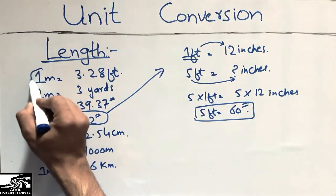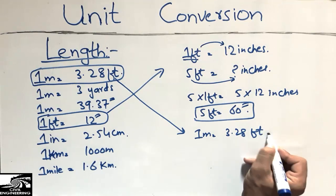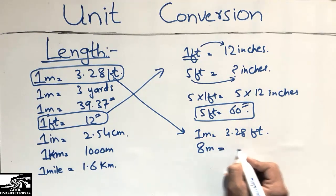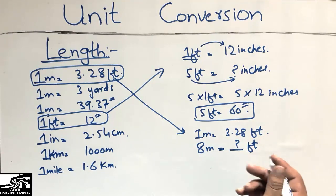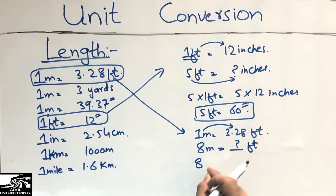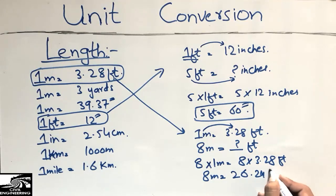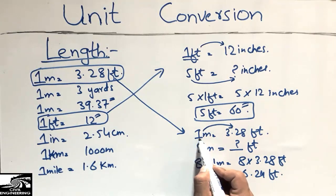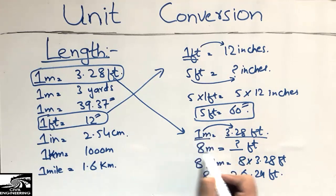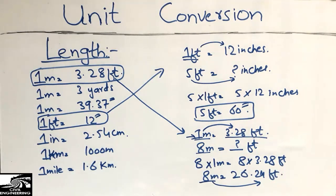The second example: how many meters is how many feet. We know that one meter equals 3.28 feet. If someone asks how many feet are in eight meters, we multiply eight by 3.28. So eight multiplied by one meter equals eight multiplied by 3.28, giving us 26.24 feet.